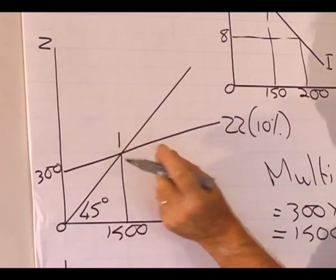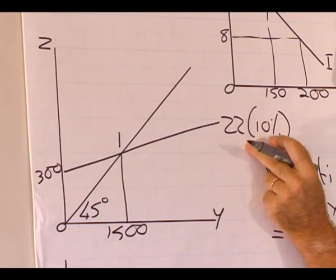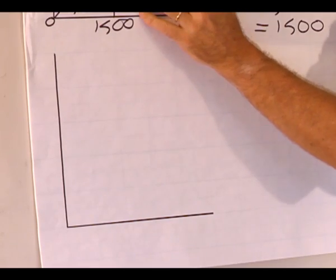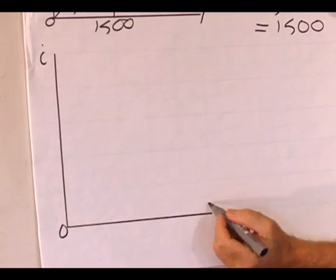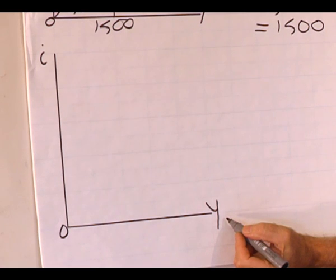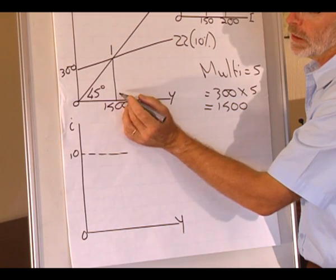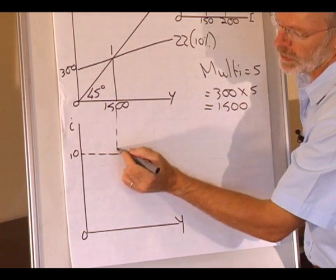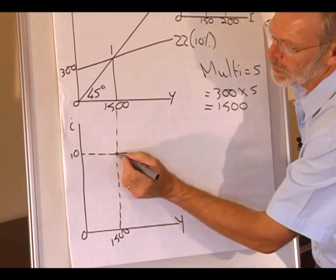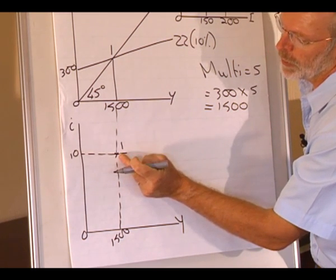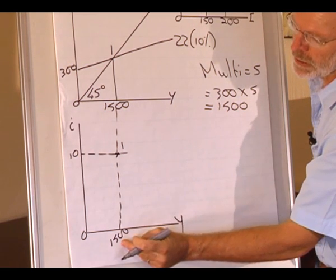So this point, let's make it point 1, represents equilibrium in the goods market if the interest rate is equal to 10%. Now we can transfer this to the bottom diagram, showing the relationship between interest rate and level of income. We now add an interest rate of 10%. The goods market is in equilibrium at 1500. So this point represents equilibrium in the goods market with the interest rate of 10%, level of production 1500.